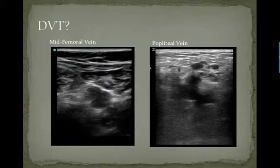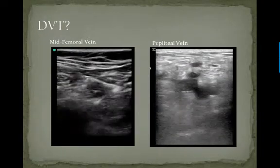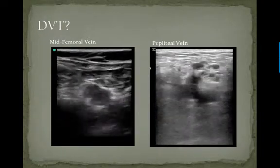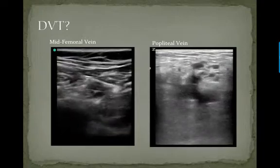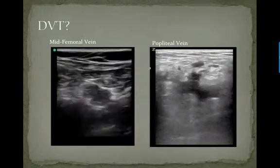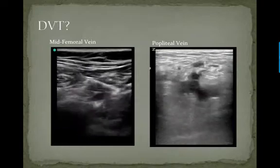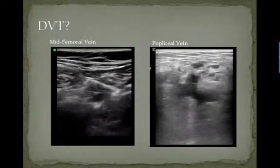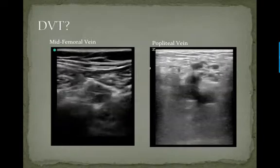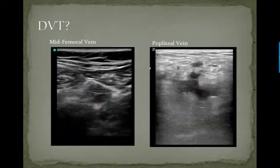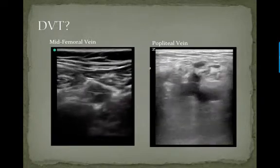And one more case. Here we can see the common femoral vein just before its bifurcation, and we can see that it is completely compressing on the left. Whereas the popliteal vein on the right is not compressing. So again, this is positive for a DVT.